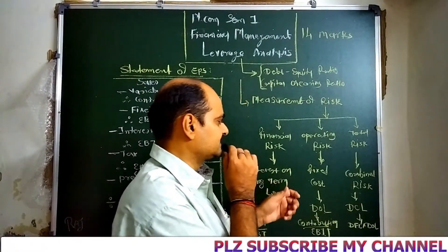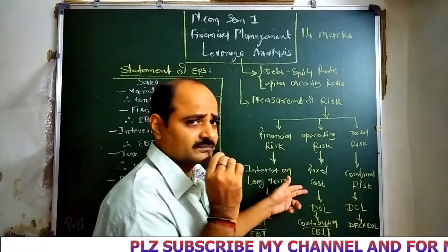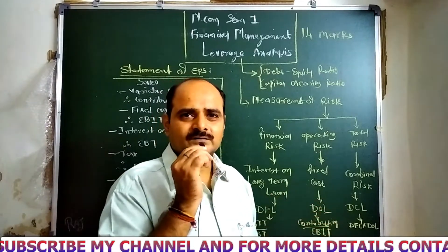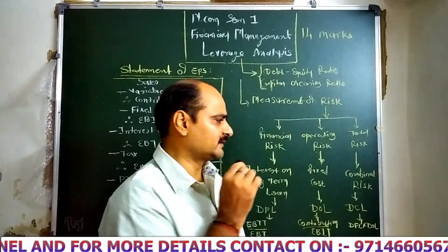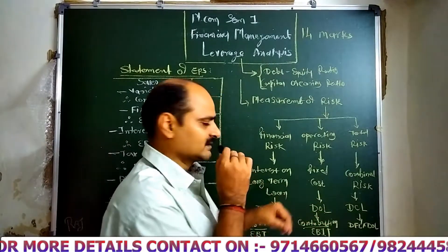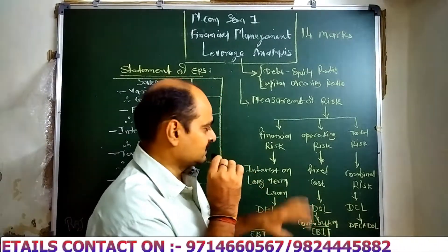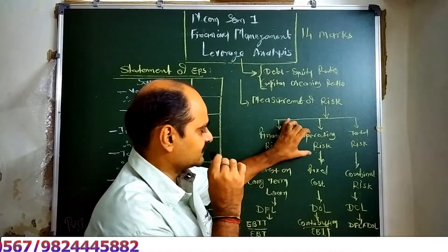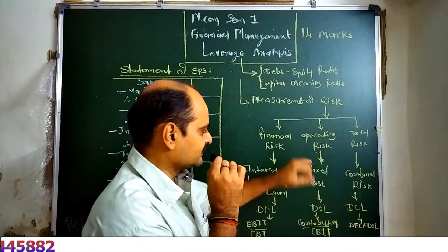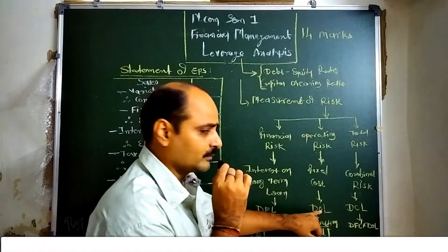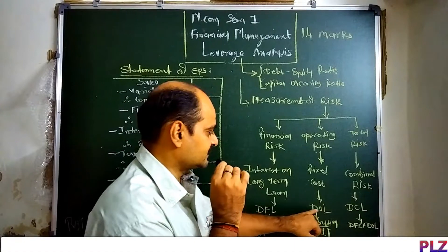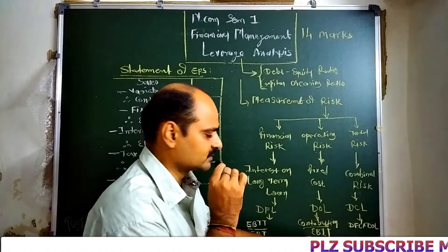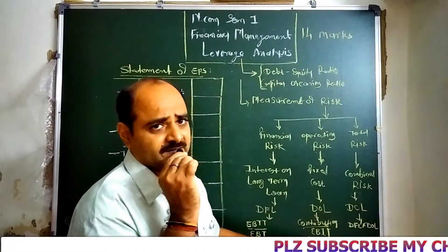Operating Risk is created due to fixed cost. There are three kinds of fixed cost: fixed factory, fixed administrative, and fixed sales overhead. Due to these fixed costs, Operating Risk is created, which is called Operating Leverage. The Degree of Operating Leverage formula is Contribution upon EBIT.